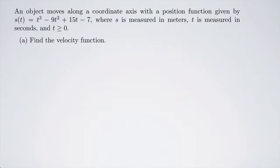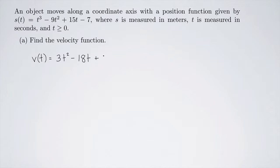Let's start by finding the velocity function. We have a position function, and to get a velocity function from the position function, we just need to take the derivative. So the velocity function, which I will denote as v of t, is going to be the derivative of this polynomial, which is 3t squared minus 18t plus 15.